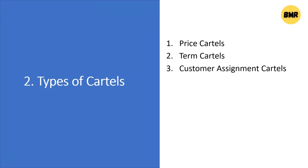Number three: customer assignment cartels. There are cartels that assign specific customers to each member. They make groups and distinctions, dividing all customers among the members in order to ensure a proper revenue flow, so all producers will be getting some customers. Customers should not be shared with other members — if you have one customer, you are not allowed to pass them to other people, nor can another person recommend that customer to you.